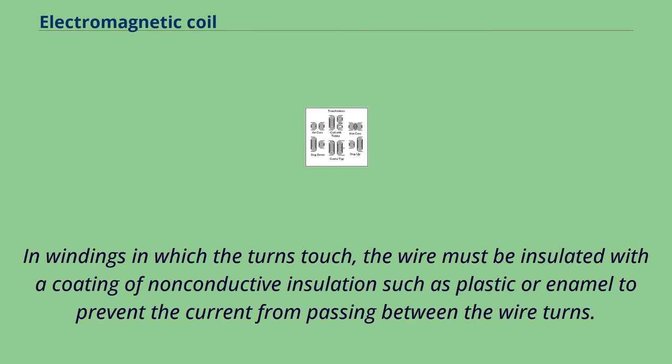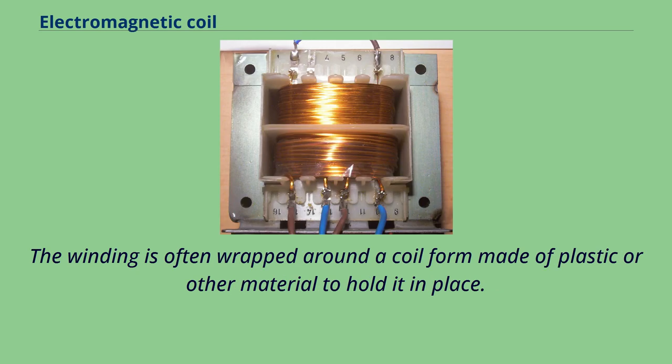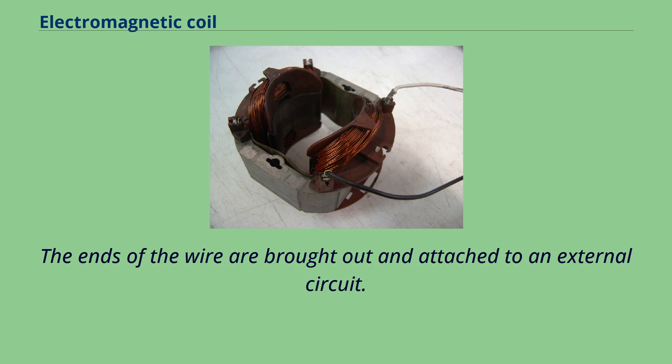In windings in which the turns touch, the wire must be insulated with a coating of non-conductive insulation such as plastic or enamel to prevent the current from passing between the wire turns. The winding is often wrapped around a coil form made of plastic or other material to hold it in place. The ends of the wire are brought out and attached to an external circuit.